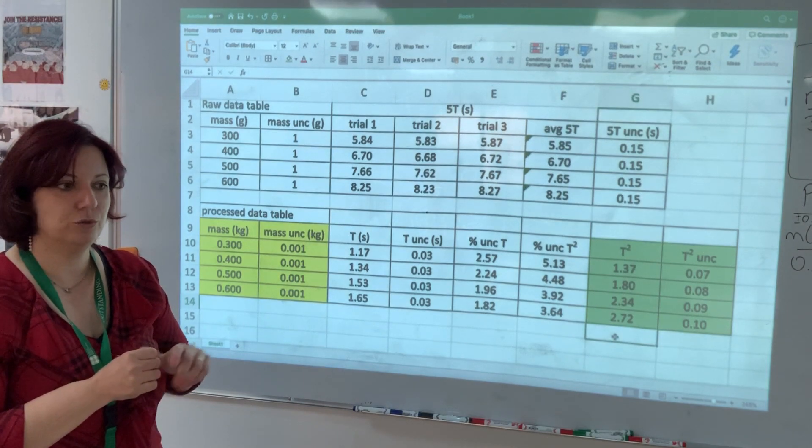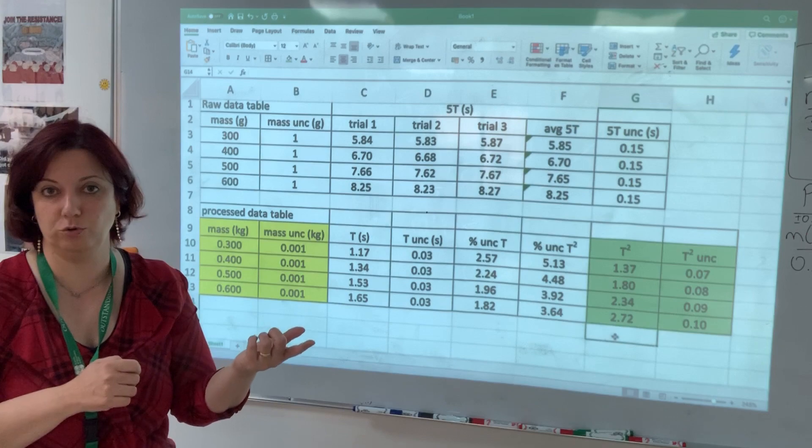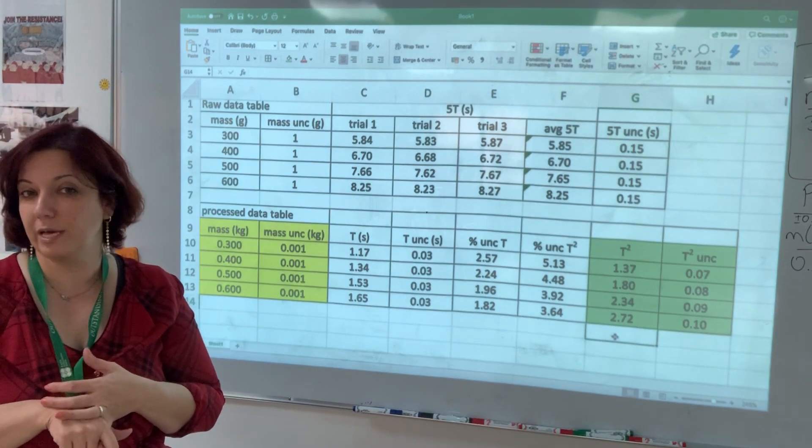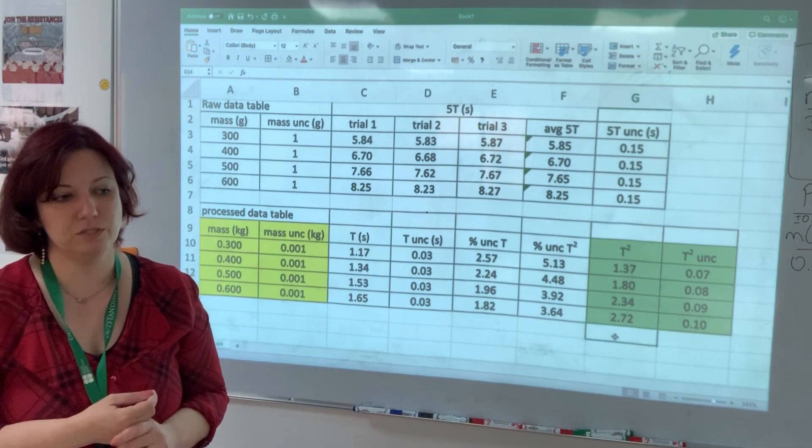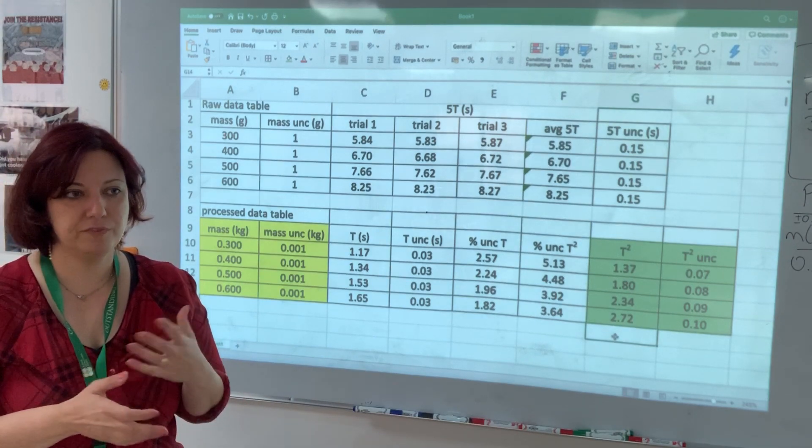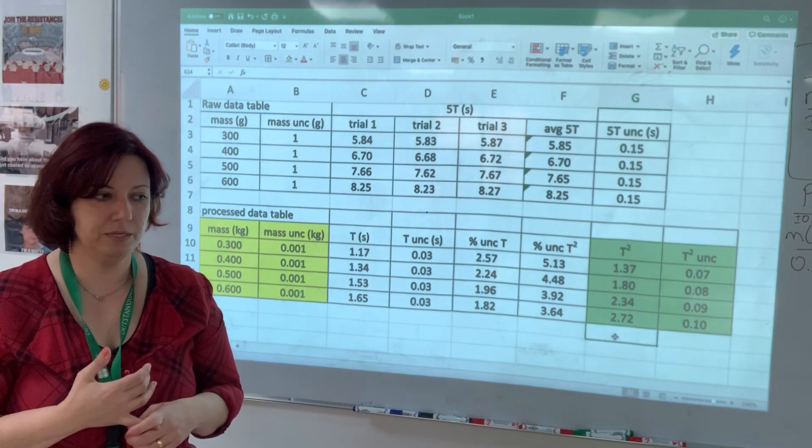So this is how you would process if you were doing the spring oscillation lab to find the spring constant. The evaluation of it would have to have a true value which was found by Hooke's law. So using that, you could calculate the percentage error and then evaluate based on that. There are a lot of things to worry about when conducting the experiment.